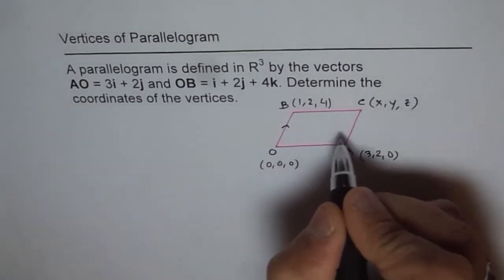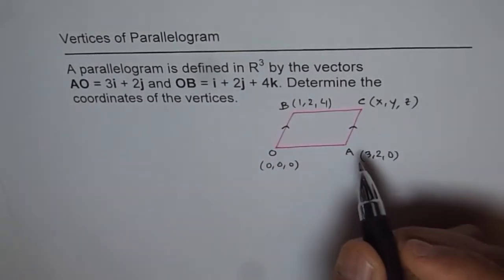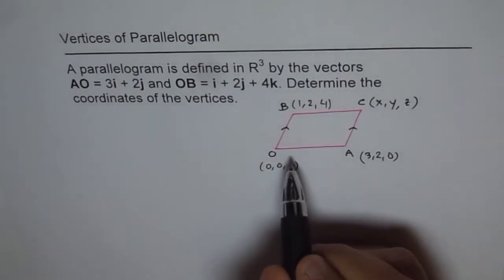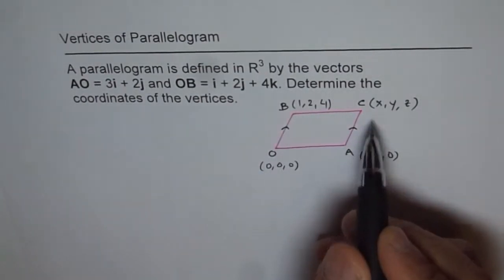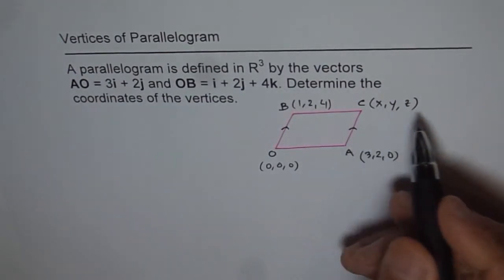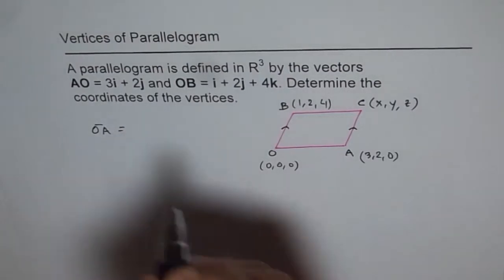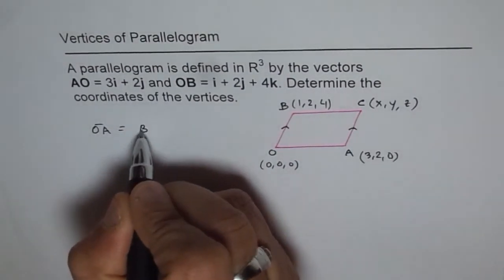Since this is a parallelogram, these sides are parallel. What we can do is go from OA equals BC. That helps to find all the points. Very simple. So we have OA equals BC.